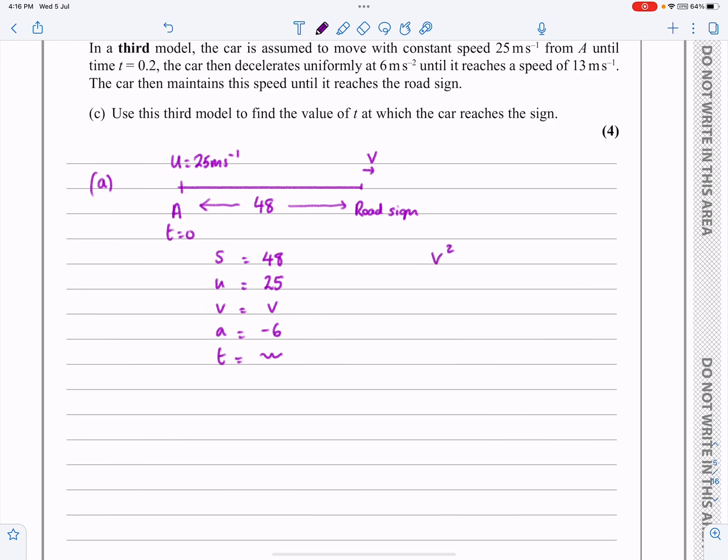It started off with a speed of 25, and we're actually interested in knowing what the speed is there. So V is what I'm looking for. They've told me it's decelerating all the way through there with a deceleration of minus 6. T is not involved. Yeah, this is my classic one that I'm looking for. Got three, looking for a fourth one. What variables am I using? S, U, V and A. I'm hoping you've done enough work that you just immediately recognize that as being V squared equals U squared plus 2AS.